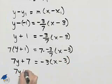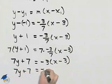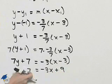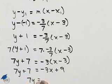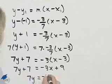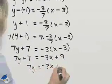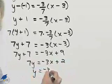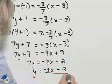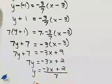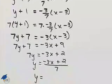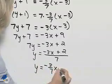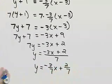Let's distribute on the right, so we get negative 3x plus 9. We'll subtract 7 from both sides, and we should have then negative 3x plus 2. And then finally we can divide both sides by 7. One last step, we can write this in slope-intercept form by dividing each term by 7, and so we get negative 3 sevenths x plus 2 sevenths.